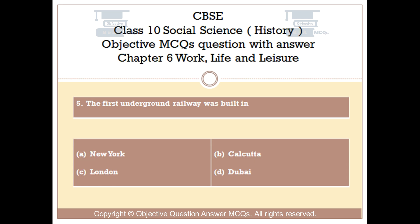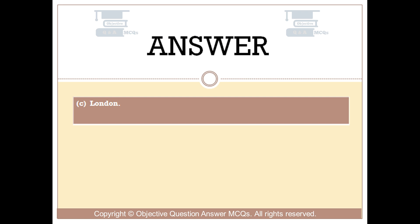Question number 5: The first underground railway was built in — Option A: New York. Option B: Calcutta. Option C: London. Option D: Dubai. The right answer is Option C: London.